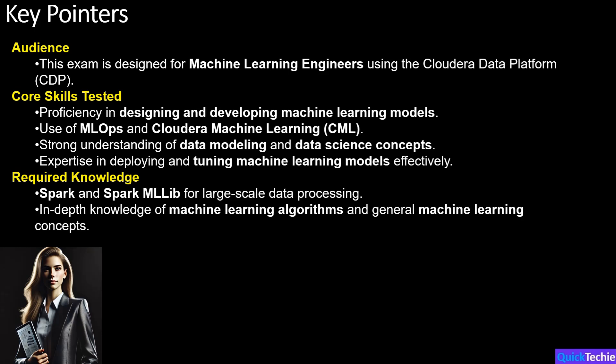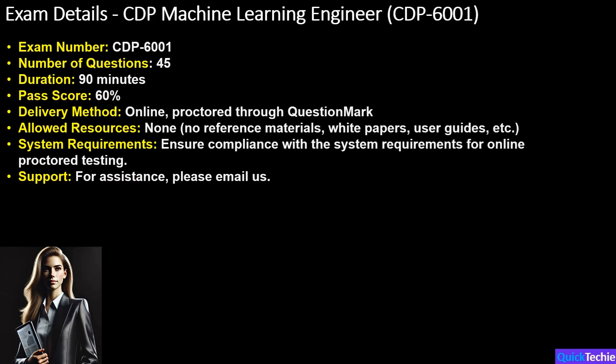To succeed, ensure you're proficient with the platform, MLOps, and machine learning tools like Spark. The exam number is CDP 6001, and it consists of 45 questions. You'll have 90 minutes to complete the exam, and the pass score is set at 60%. The exam is delivered online and is proctored, so make sure you review the system requirements. During the exam, there are no allowed resources — you won't be able to use any reference materials, white papers, or user guides. Prepare thoroughly since you'll be relying solely on your knowledge.